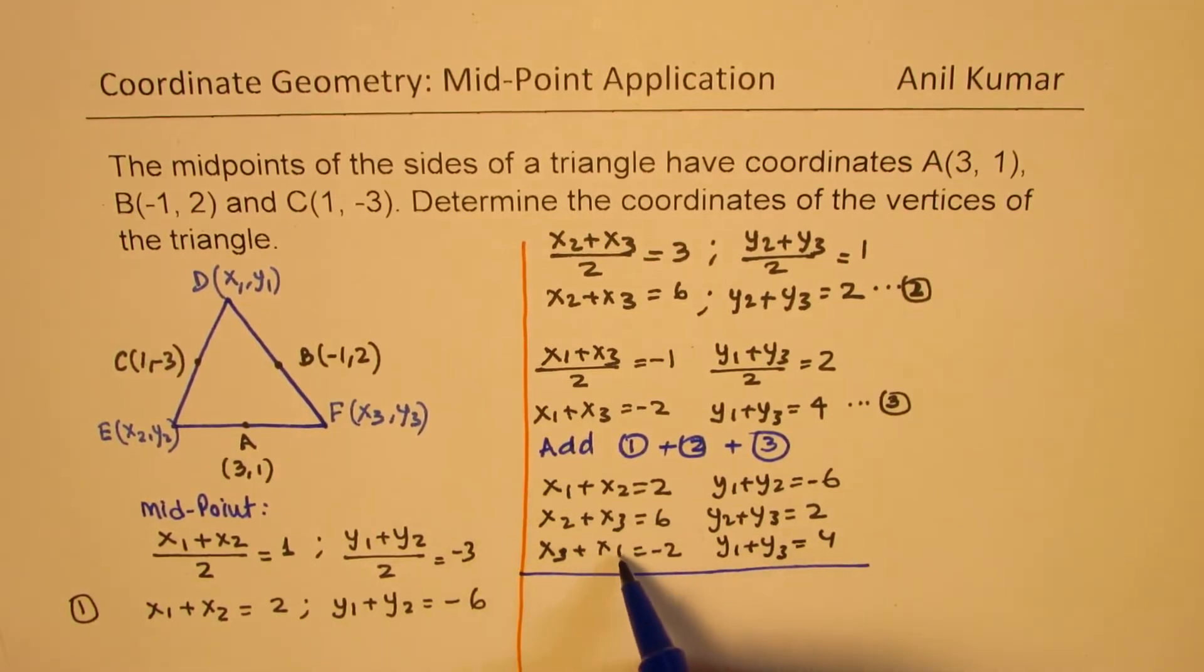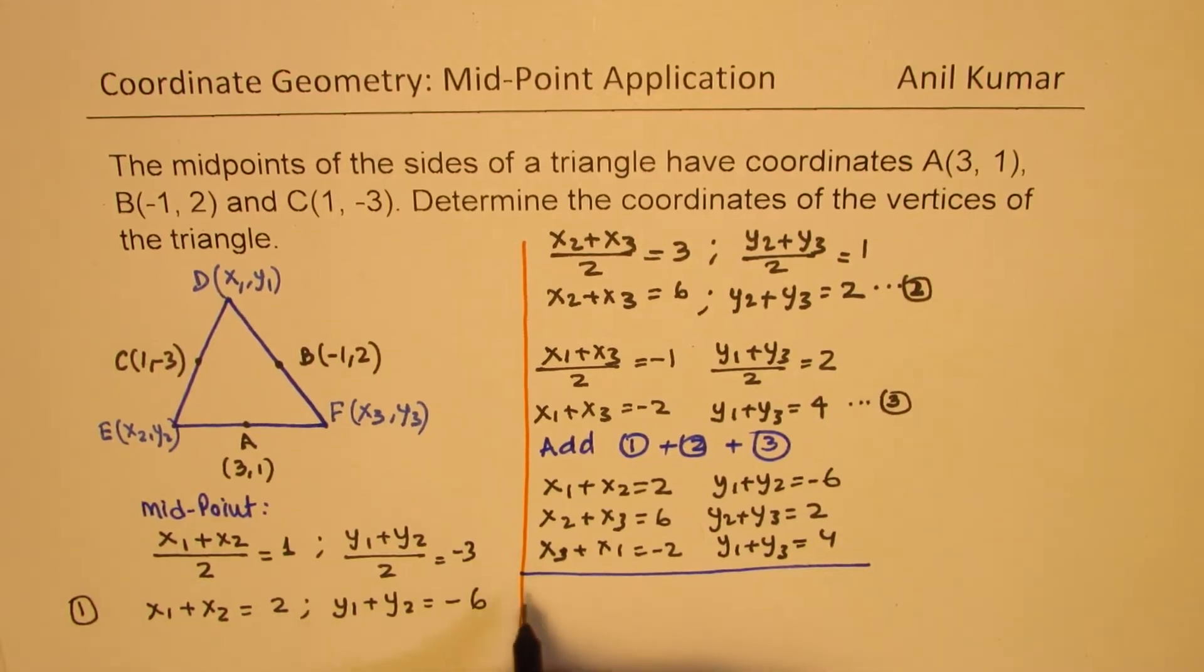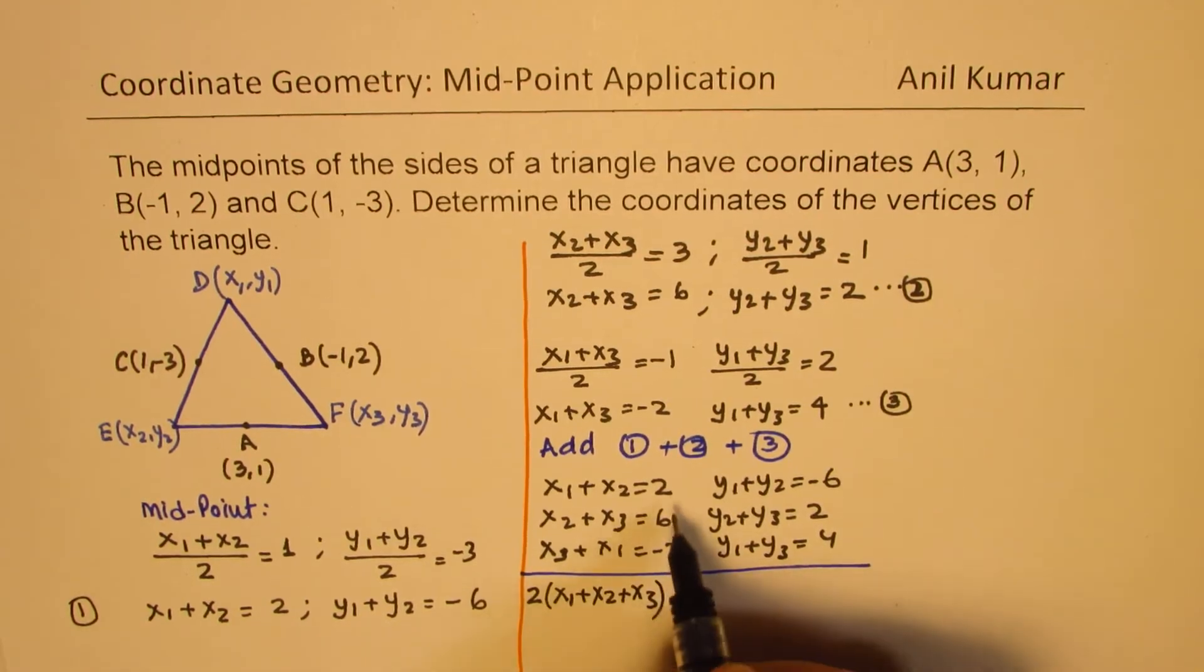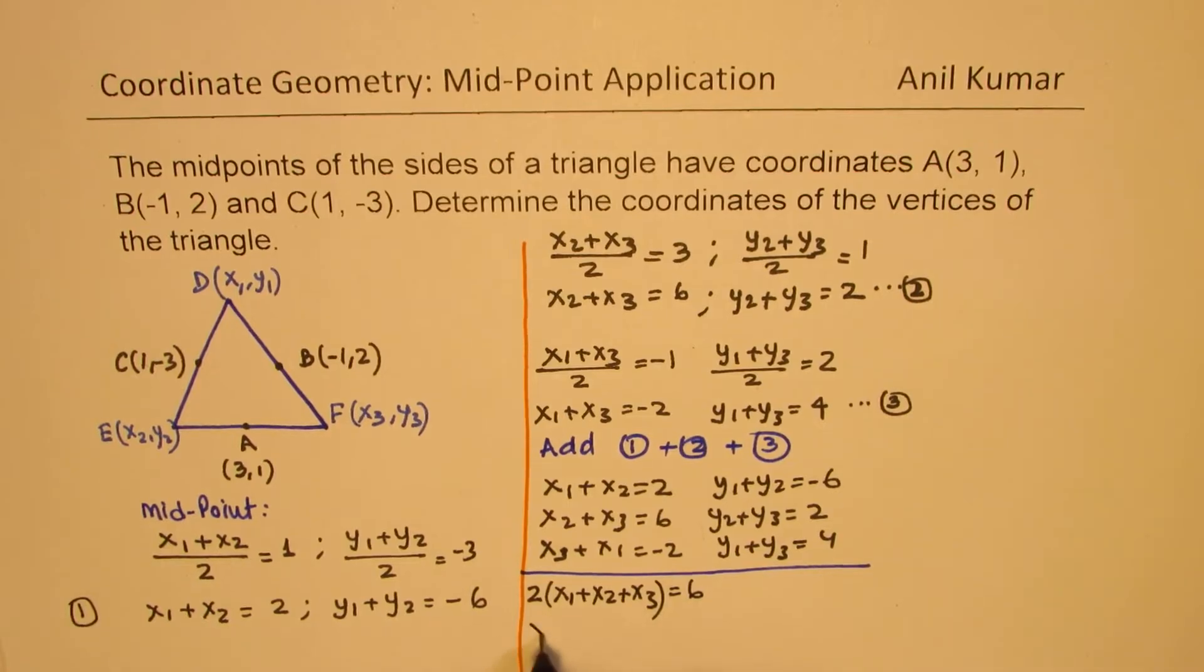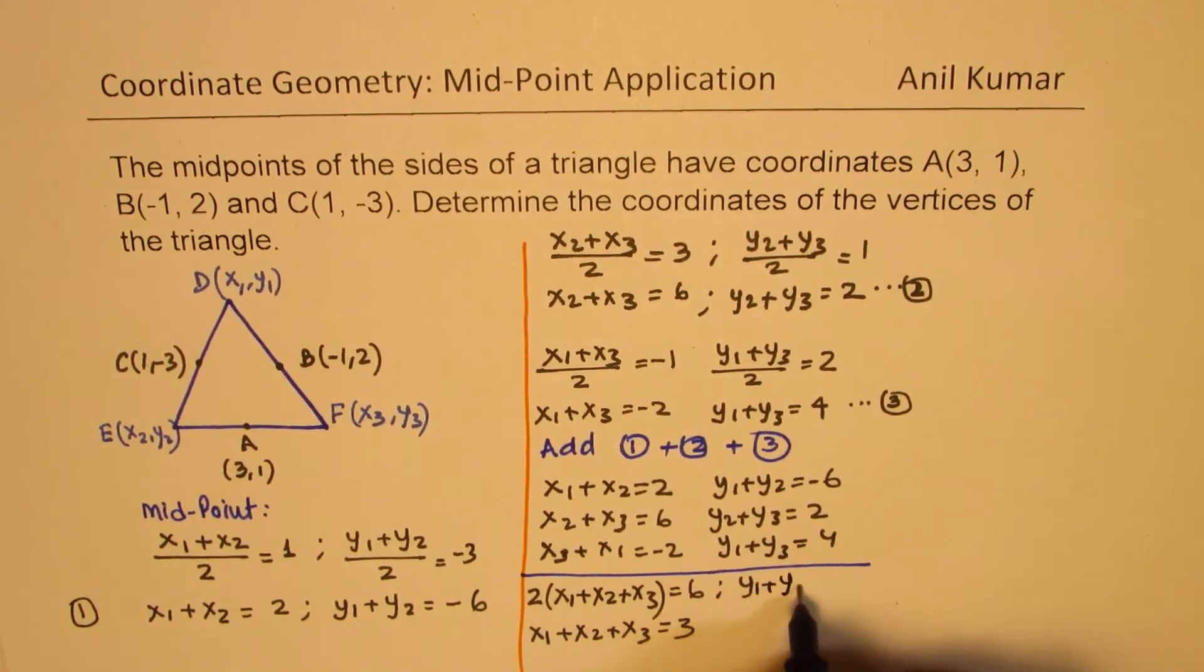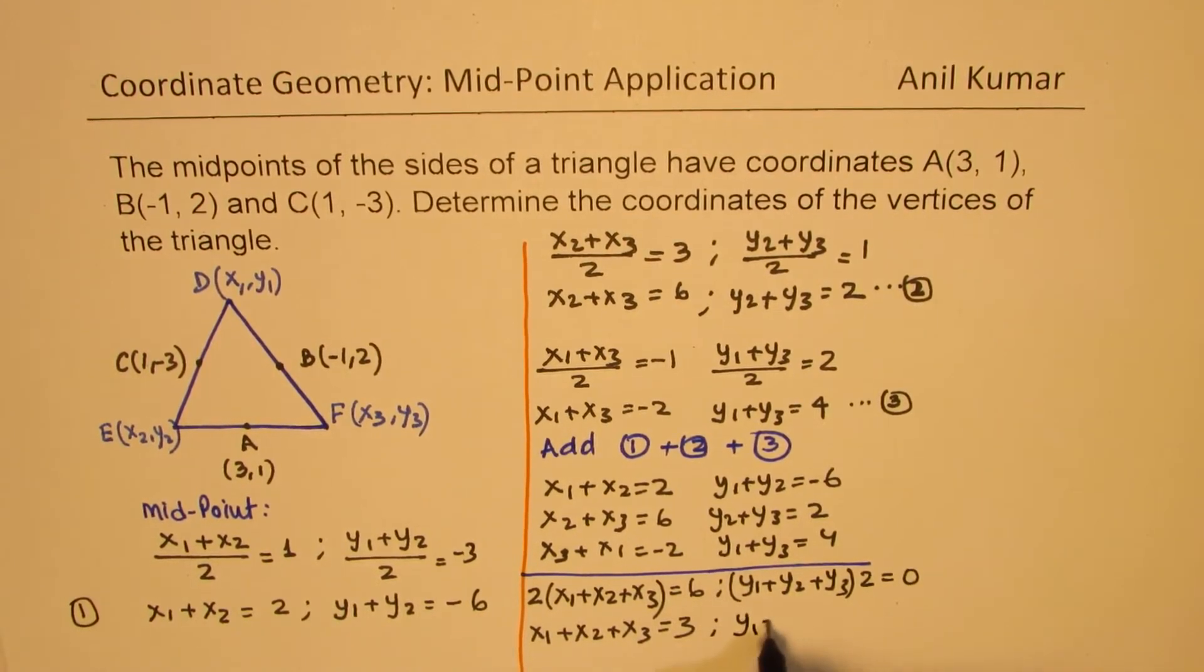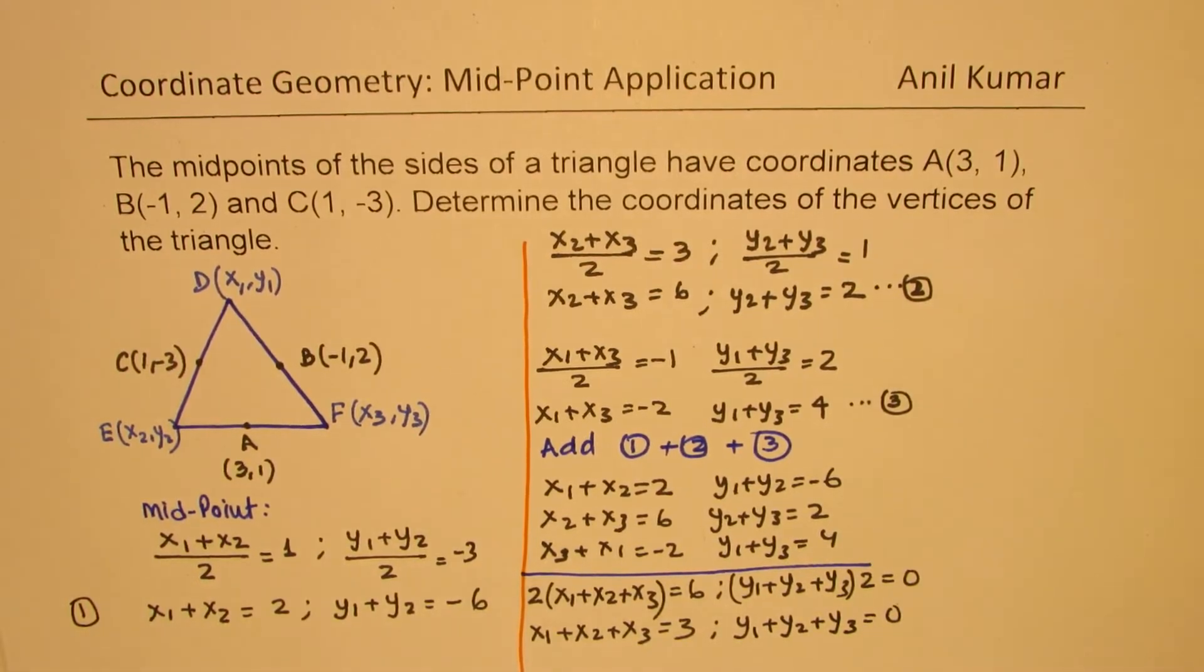Now if I add them, then we get twice x₁, twice x₂, and twice x₃. I rewrote this just to show you clearly that we get 2 times all these values. So we get 2 times (x₁+x₂+x₃) as equal to add them all, which is 6. Or x₁+x₂+x₃ is half of 6, which is 3. Here we get 2(y₁+y₂+y₃). Because when you add it's twice, and that is 0. And so we get y₁+y₂+y₃ equals to 0.